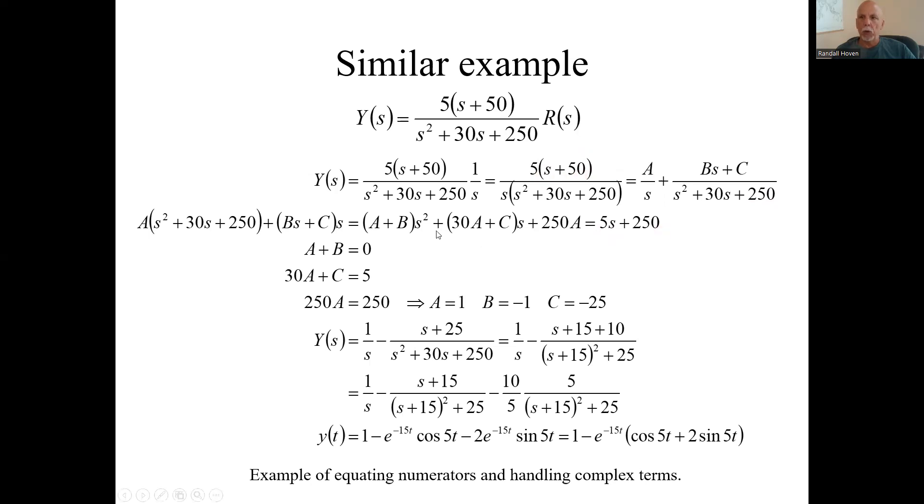So now you're equating powers of s. A plus B has got to equal zero because there is no s squared term in the numerator. 30A plus C needs to equal 5. And 250A needs to equal 250. Three equations and three unknowns. And you find your A, B, and C.